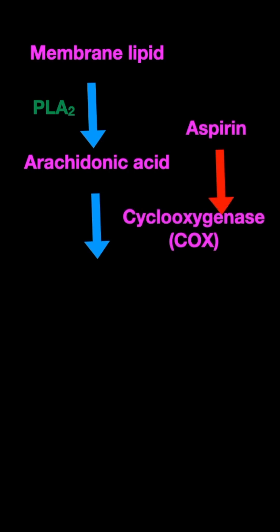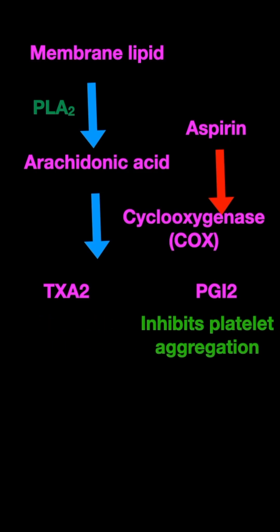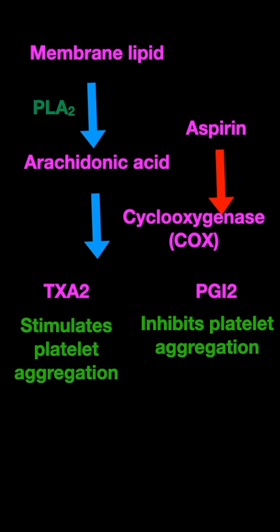So we have thromboxane A2 and we have prostaglandin I2. Prostaglandin I2 is an inhibitor of platelet aggregation, and thromboxane A2 is the stimulator of platelet aggregation.